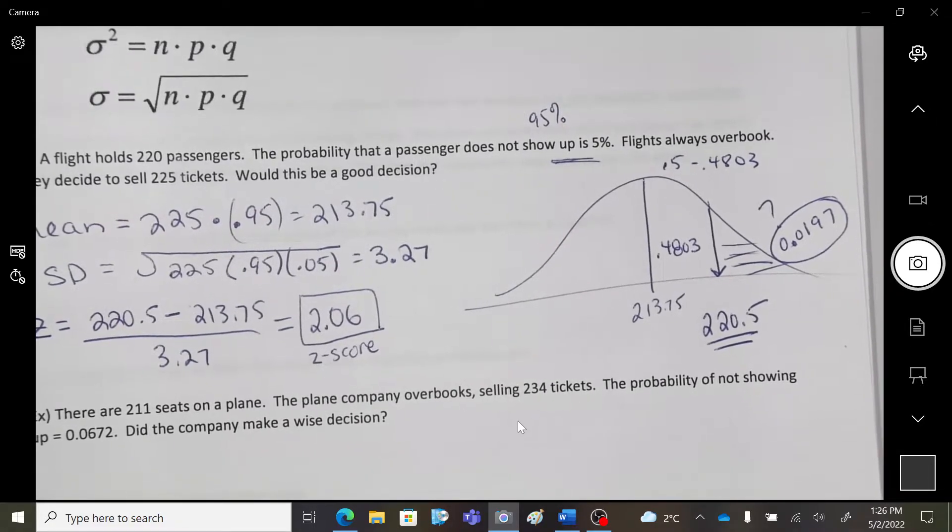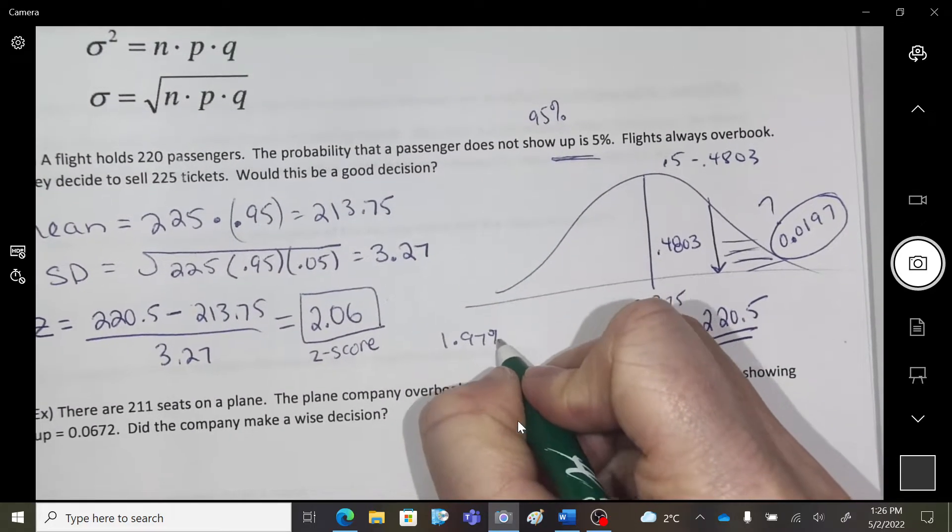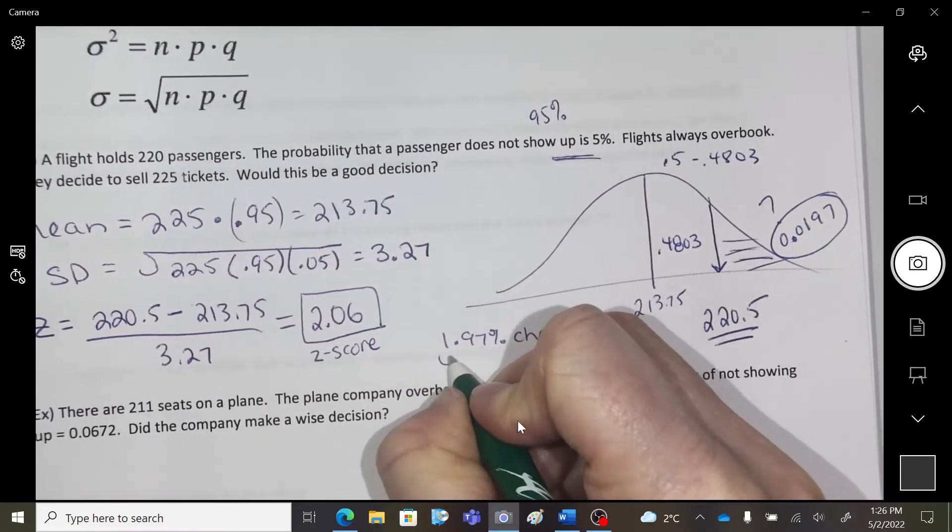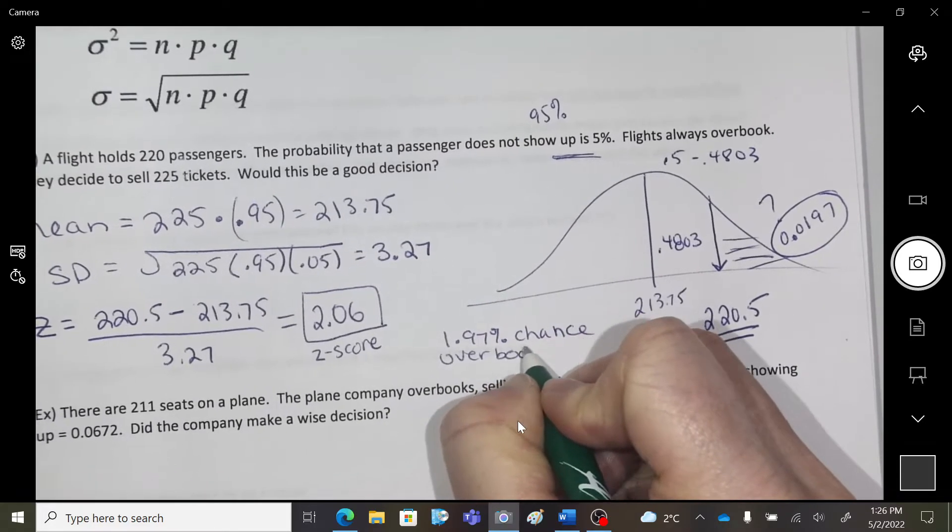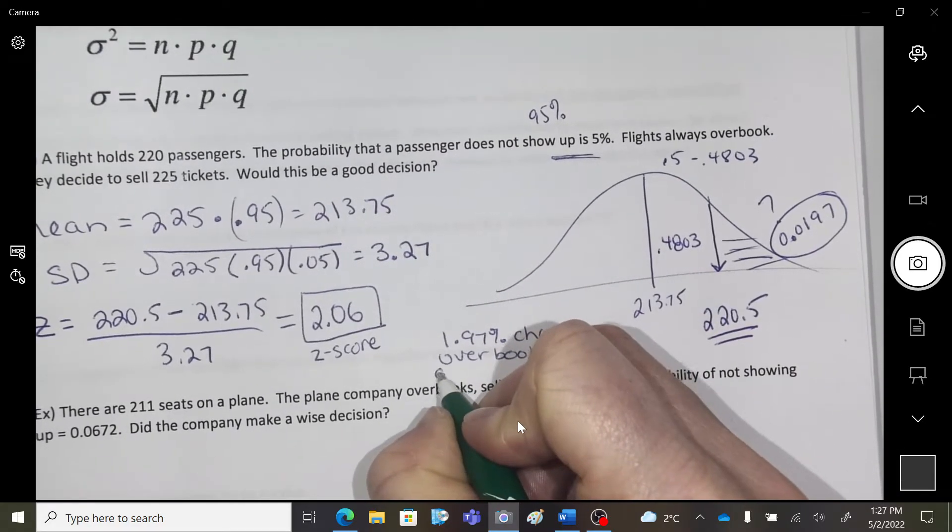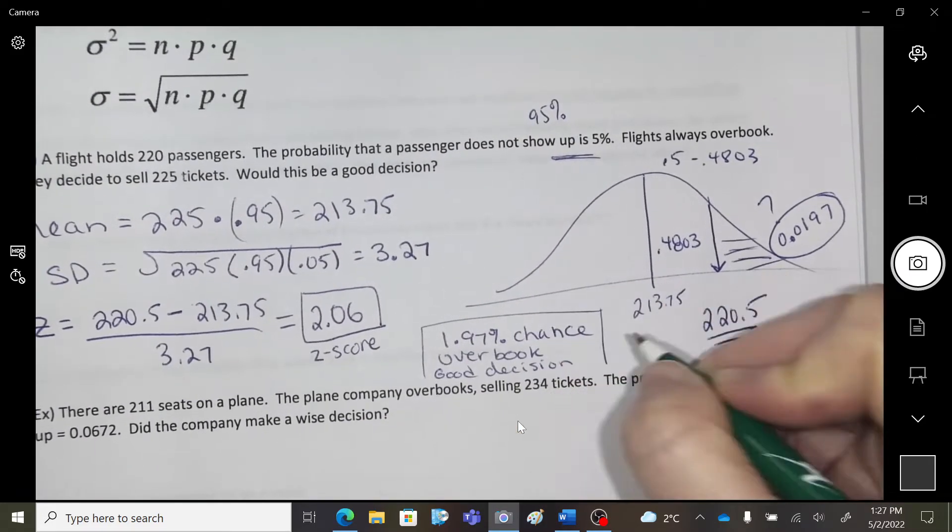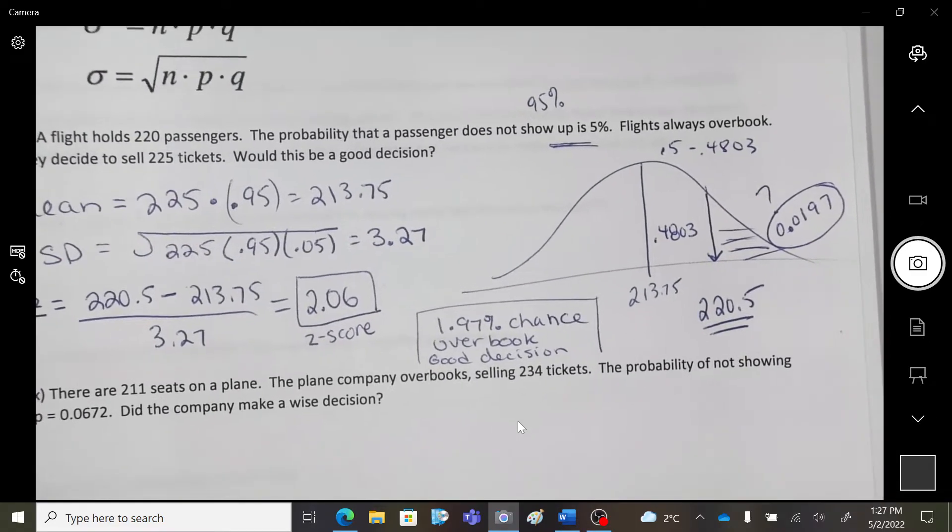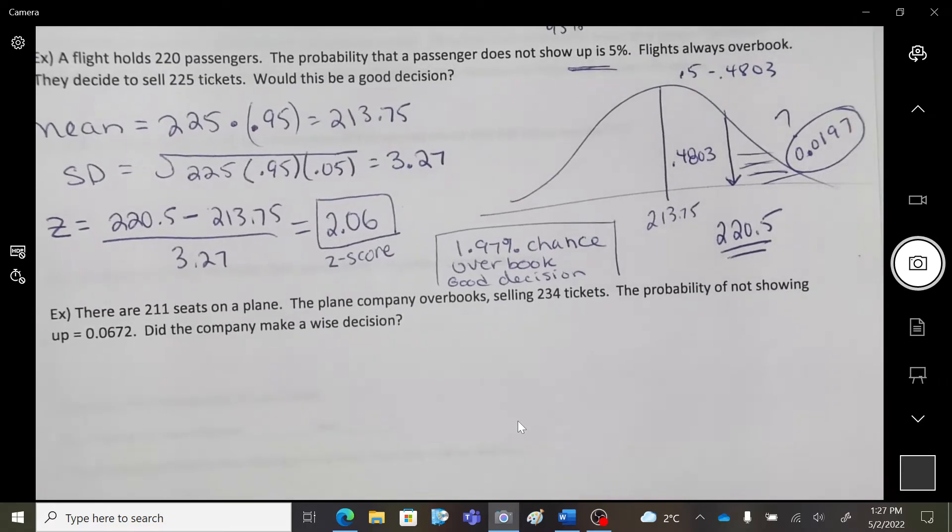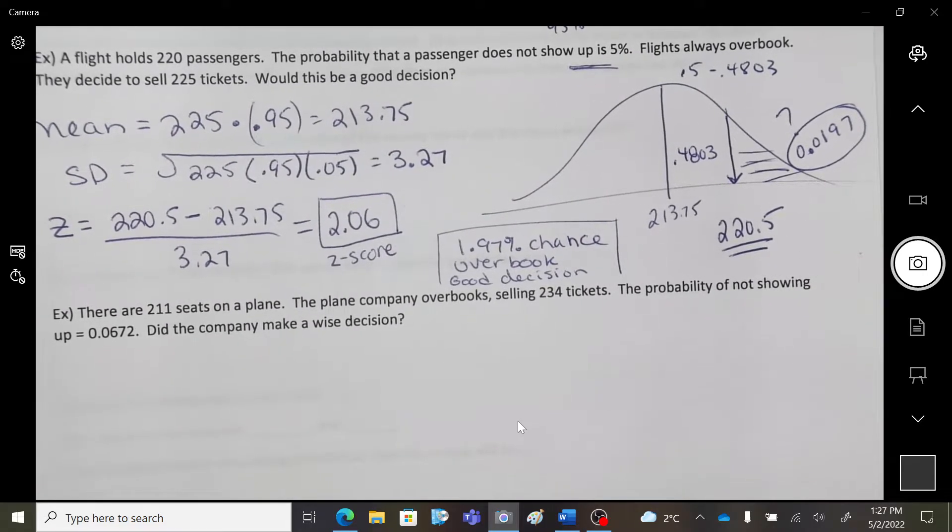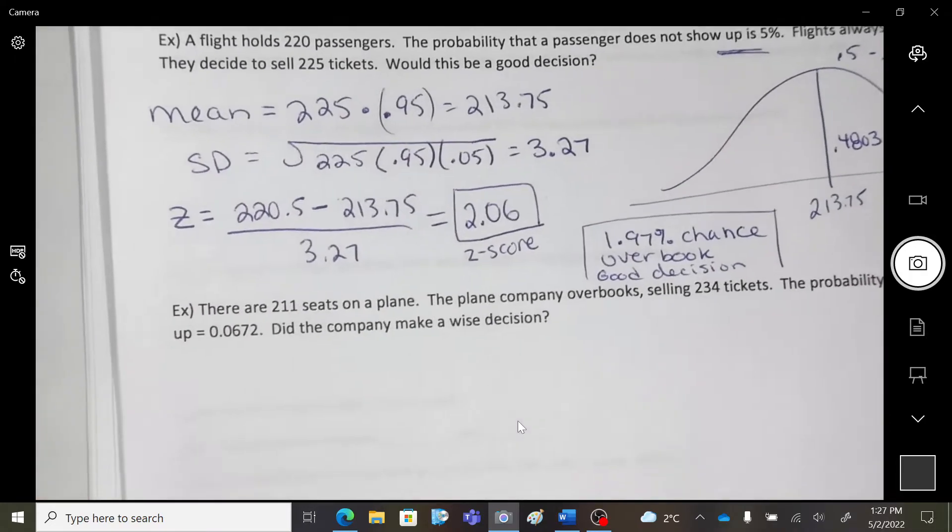Yeah. If that's the percent chance that you have of being overbooked, then take the risk. You're selling a bunch of extra tickets. Okay. Let's try the next one, then.